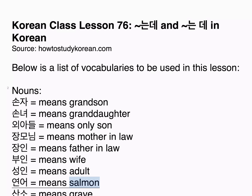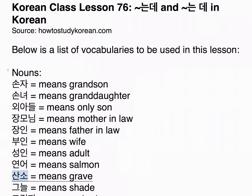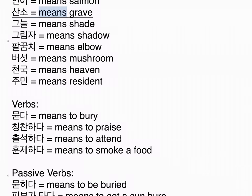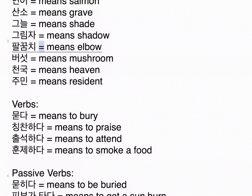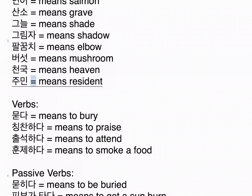연어 means salmon. 산소 means grave. 그늘 means shade. 그림자 means shadow. 팔꿈치 means elbow. 버섯 means mushroom. 천국 means heaven. 주민 means resident.